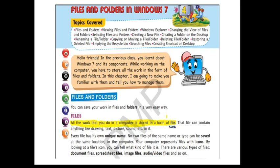Now, a file can contain anything. It can be a text file, it can be a picture file, it can be a sound file, etc. Each file has its unique name. So every file must have a unique name, otherwise it will become a duplicate with each other. Sometimes if all the files have the same name, they can get replaced by each other. That is why each file must have a unique name.